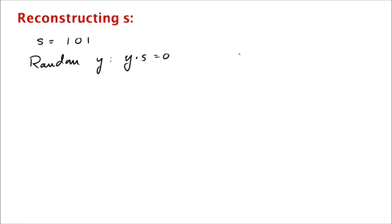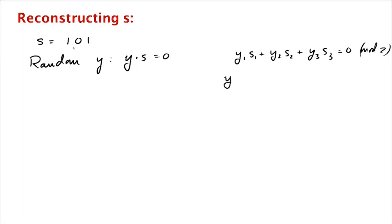What this means is y1·s1 plus y2·s2 plus y3·s3 is 0 mod 2. Working modulo 2 means we are dropping all the carries. So what are all the y's that satisfy this condition when s is 101? You can work through them: y must be either 000, 010, 101, or 111. For example, if y was 100, then y1·s1 would be 1 and the other two would be 0, so the sum mod 2 would be 1.